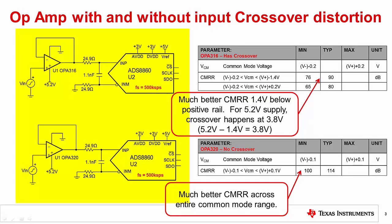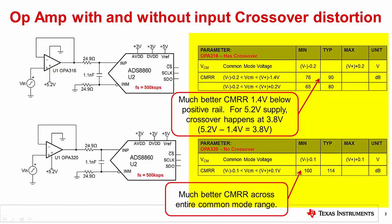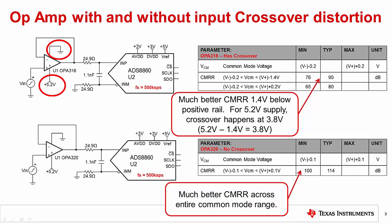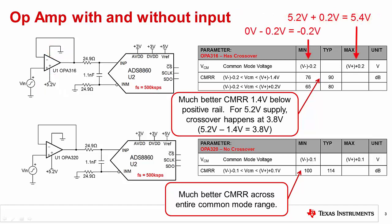The schematics at the left-hand side show the circuits we will evaluate. The only difference between the two circuits is the op-amp being used. The right-hand side shows small excerpts from amplifier data sheets. Specifically, we are looking at the common mode range and the common mode rejection, or the CMRR specification. The common mode range for both amplifiers goes beyond the power supply rails. For the OPA316, the common mode range is 0.2 volts below the negative rail and 0.2 volts above the positive rail.